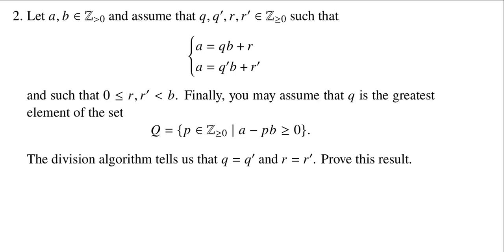So here we're assuming that we have two positive integers, A and B, and then four other integers, Q, Q prime, R, and R prime.